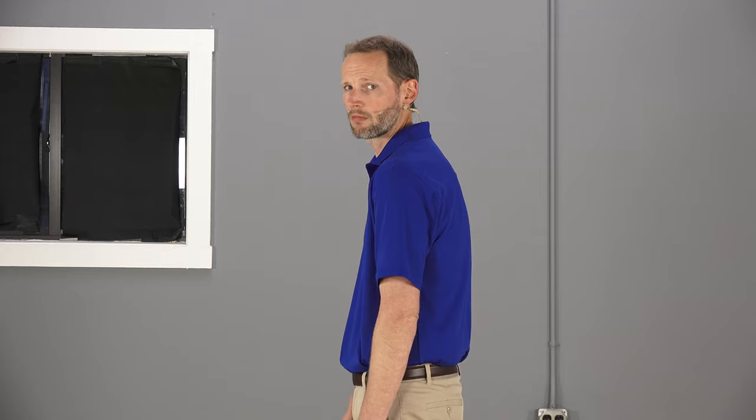So signs that your pec minor is tight. The easiest one to see on people is that rounded posture. You'll see people that actually, if you sit and look at them as they're walking or sitting, you'll see their shoulders are actually rounded forward. So again, we talked about that muscles attached to the shoulder blade and if it's really short and tight, it's actually pulling us forward here.